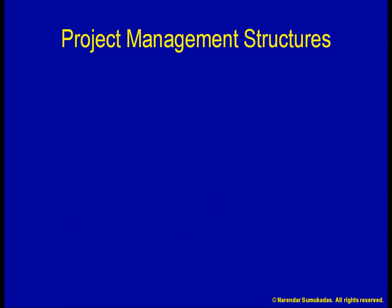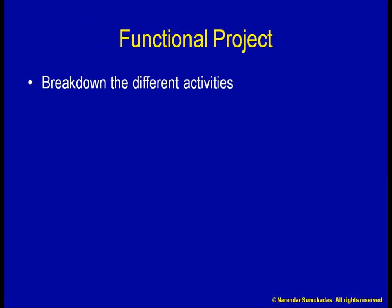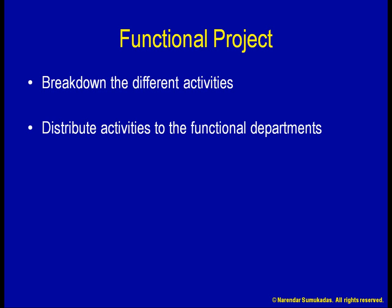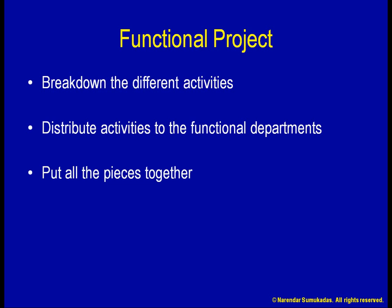How should this project be structured? One way to do this is using a functional project structure. First, you break down the project into different activities, then you identify the activities that are related to each functional department and distribute them. The customer service related activities go to Bill, the accounting related activities go to Sarah, and so on. Then, at the end of two weeks, you simply put all the pieces together and type up your report.